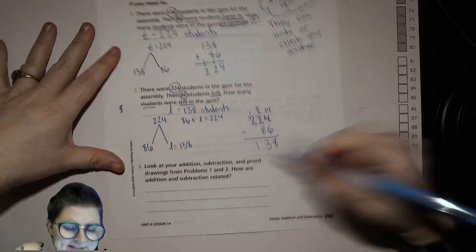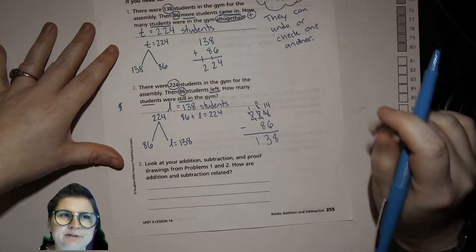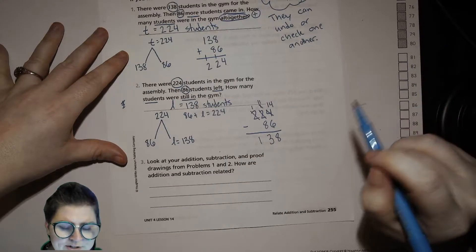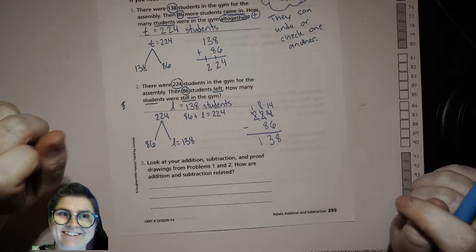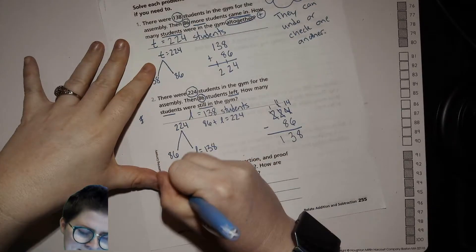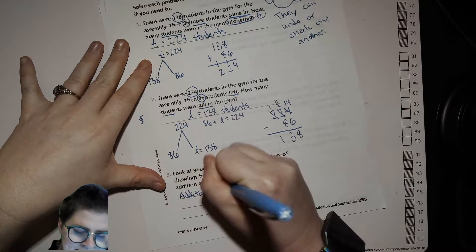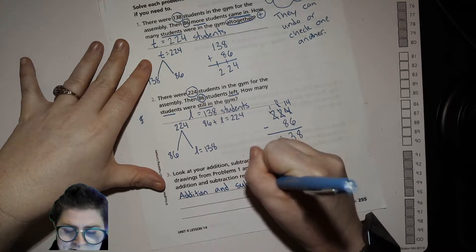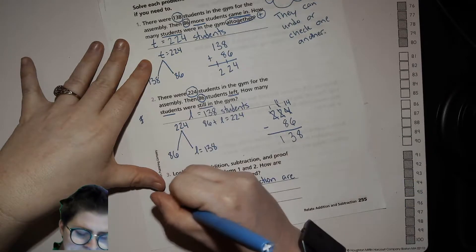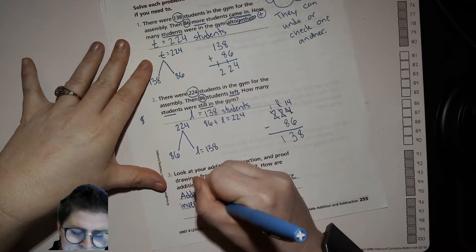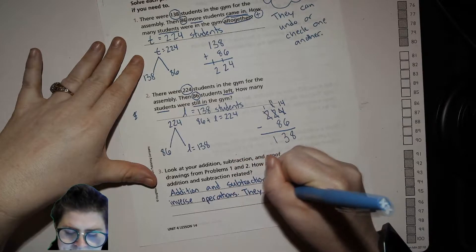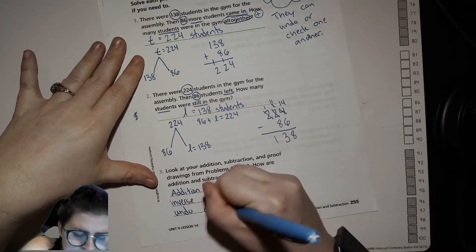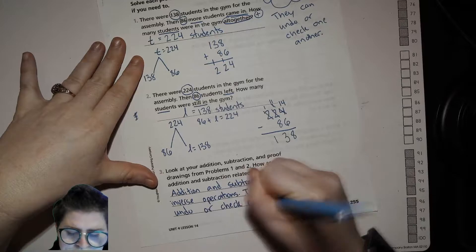Now this next part, I want you to think about and write your own answer before you see what I wrote. Look at your addition, subtraction, and proof drawings from problems 1 and 2. How are addition and subtraction related? So pause, write your answer, and then hit play when you're ready for mine. Okay. I'm gonna write: addition and subtraction are inverse operations. They can undo or check each other.